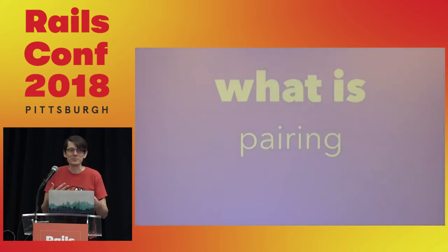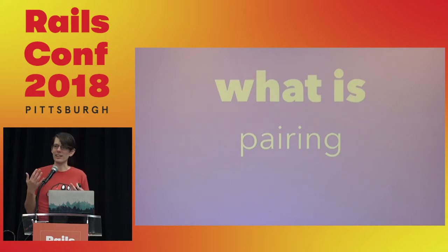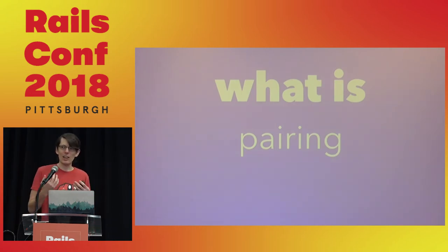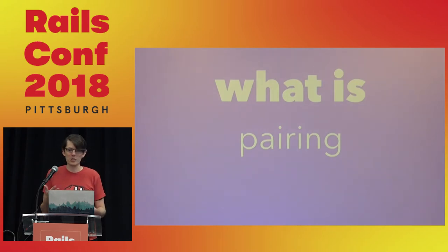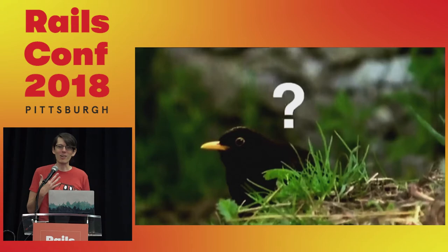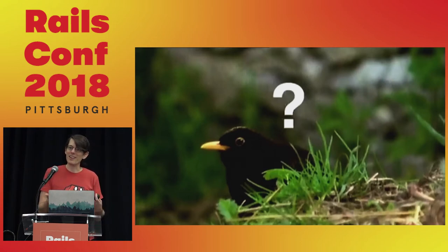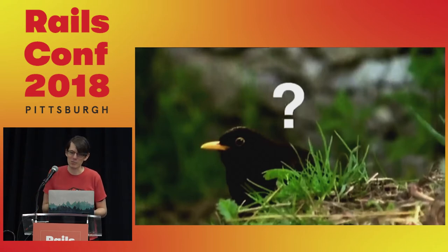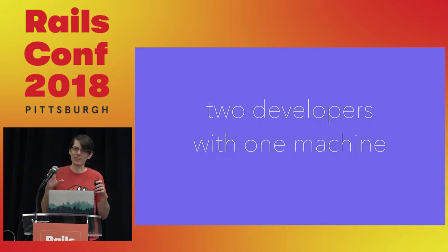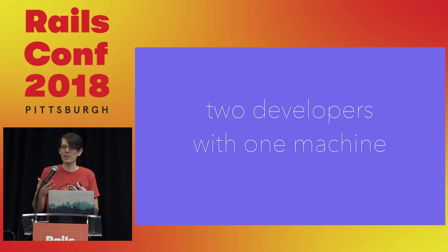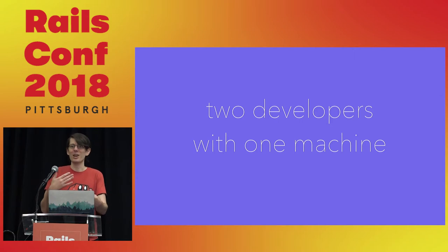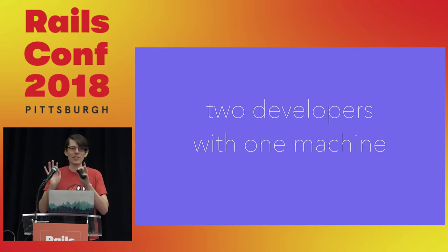Even if you're already convinced that pairing is good — which seems to swirl around in the zeitgeist of the Ruby community — that doesn't come with a definition or instructions. If you ask ten different developers what pairing is, they'll give you ten completely non-overlapping answers. For this talk, we'll start with the simplest possible thing: working with another developer on a single machine. One computer — even if you have two screens and two keyboards and two mice, you're both working together on the same machine.